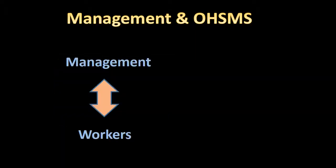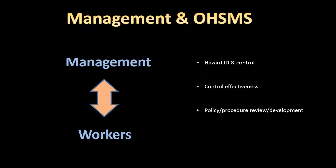In order to set up and maintain an effective occupational health and safety management system, there should be an open line of communication between management and workers regarding issues like hazard identification and control, reviewing the effectiveness of controls, reviewing or developing policies and procedures, and incident investigation.